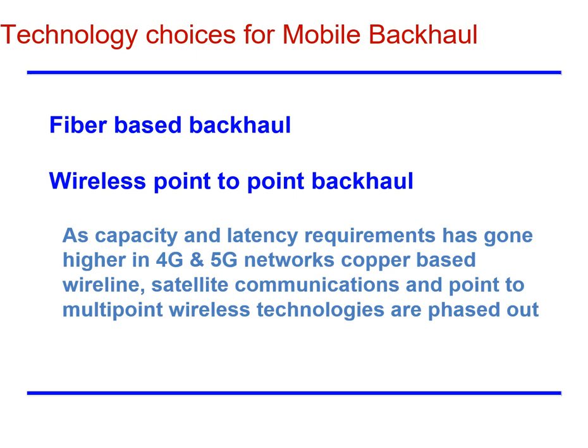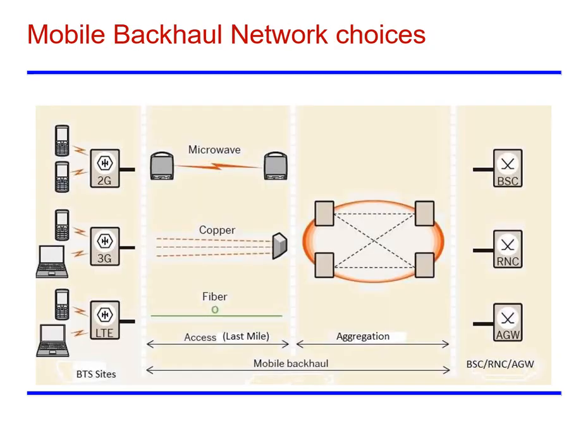We will now see the technology choices for mobile backhaul. The first option is fiber-based backhaul, and then we have the wireless point-to-point backhaul network. Capacity and latency requirements have gone higher in 4G and 5G networks; copper-based wireline, satellite communications, and point-to-point or point-to-multipoint wireless technologies are being phased out. Backhaul can be a microwave link, a copper link, or a fiber-based solution.